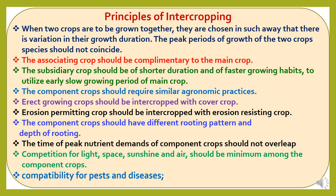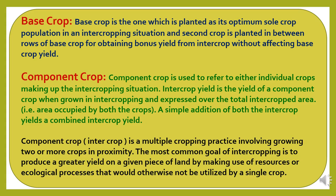Fifth, erect growing crops should be intercropped with cover crops. Sixth, erosion-permitting crops should be intercropped with erosion-resisting crops. Seventh, the component crops should have different rooting patterns and depth of rooting. Eighth, the time of peak nutrient demands of component crops should not overlap. Ninth, there should be minimum competition for light, space, sunshine, and air among the component crops. Tenth, compatibility for pest and diseases. These are the principles for choosing intercropping combinations.